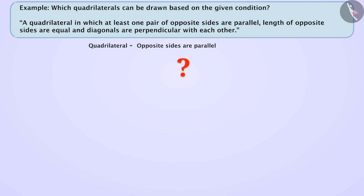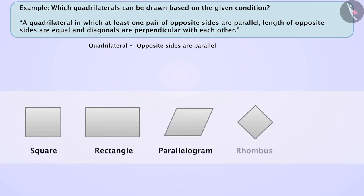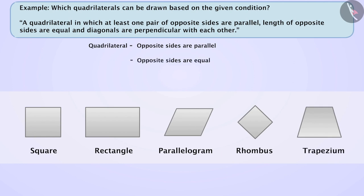Think for a while. This is true for square, rectangle, parallelogram, rhombus, and trapezium. Now, the second condition is that the length of opposite sides should also be equal. Can you tell me which of these quadrilaterals — square, rectangle, parallelogram, rhombus, and trapezium — has equal opposite sides?